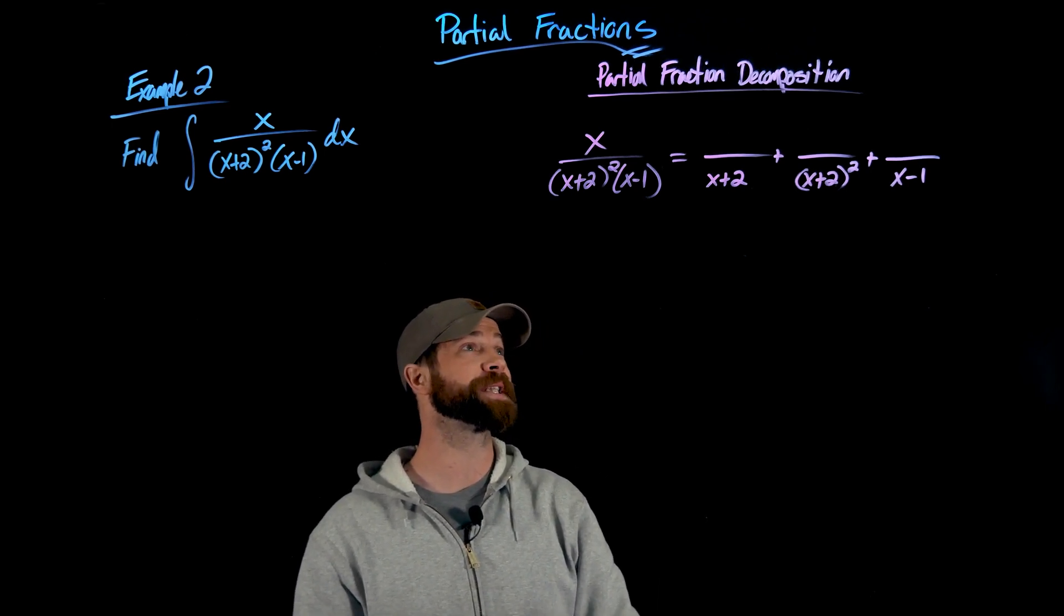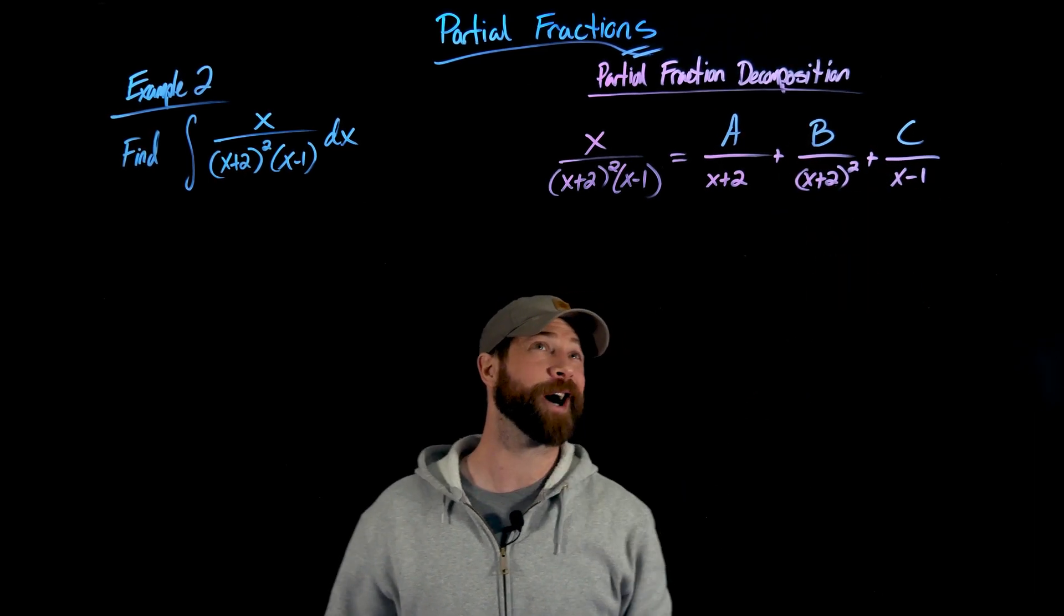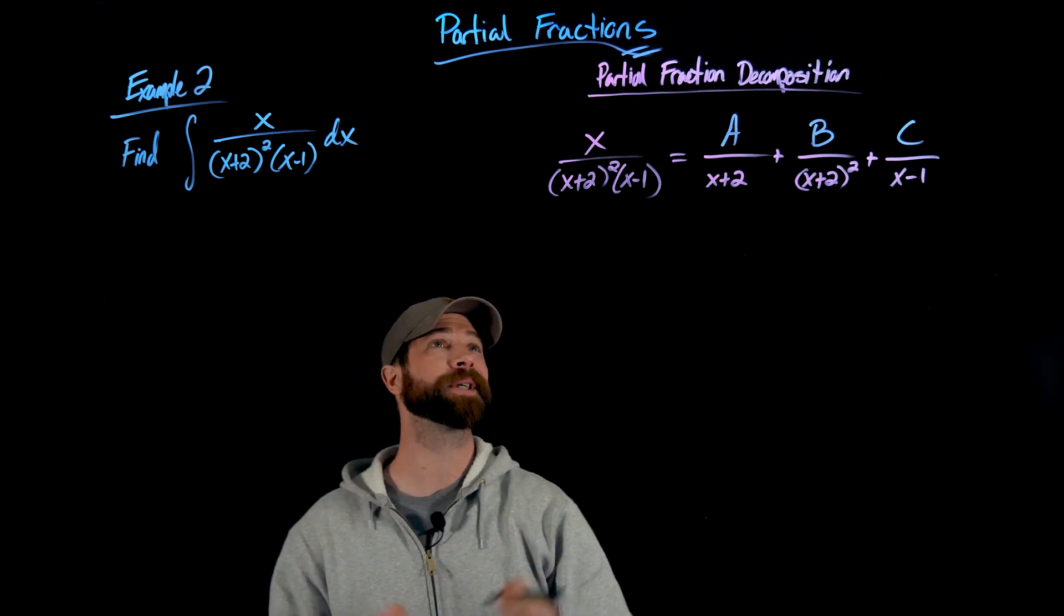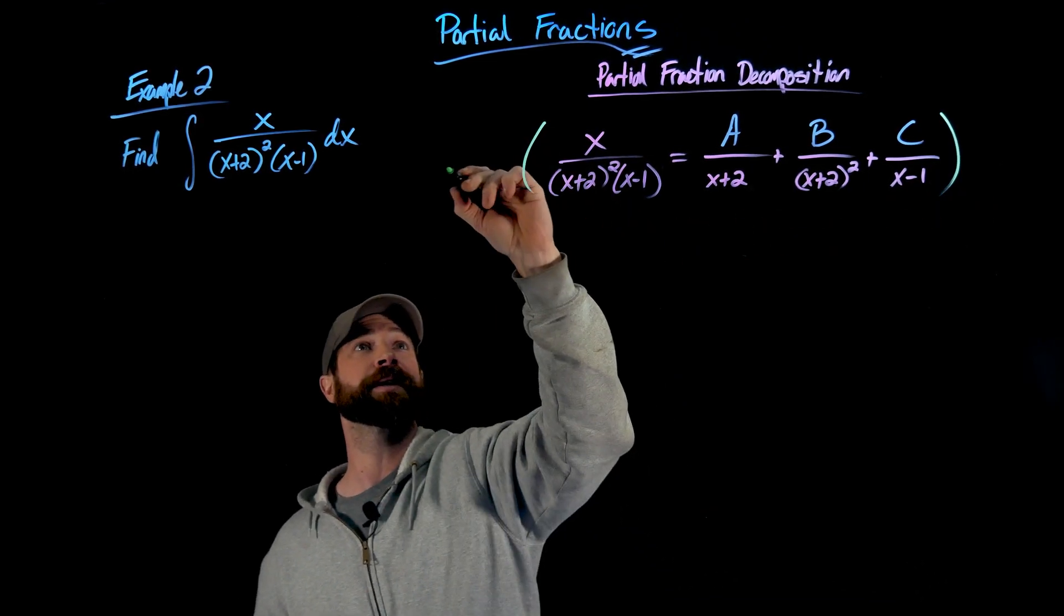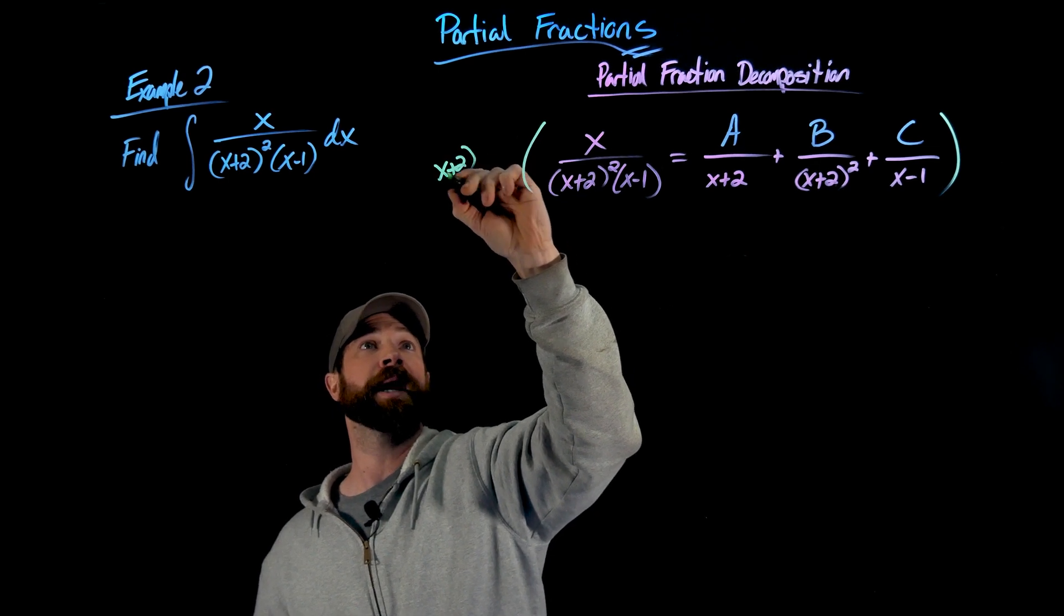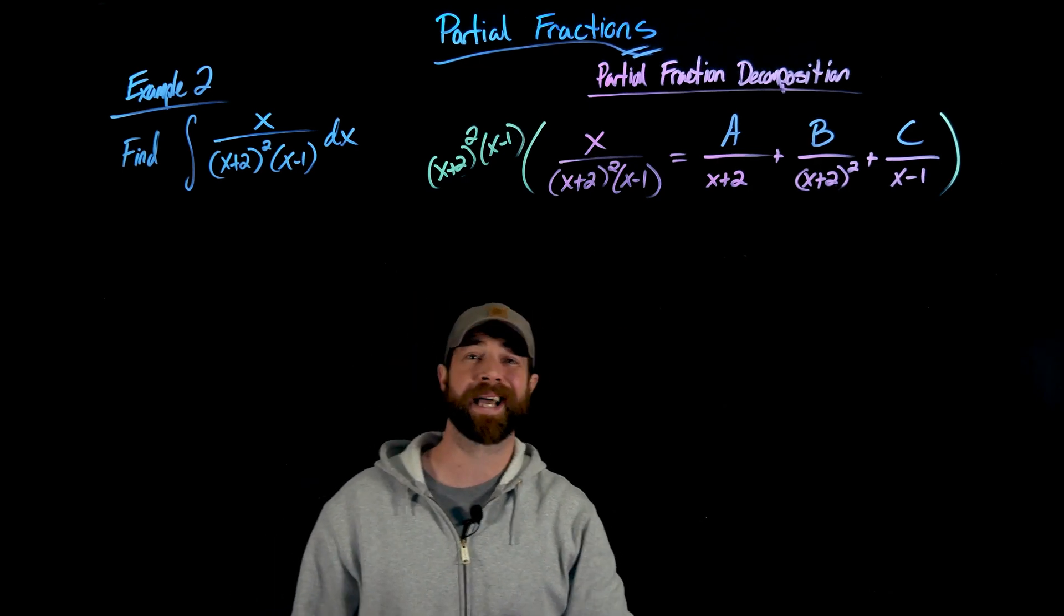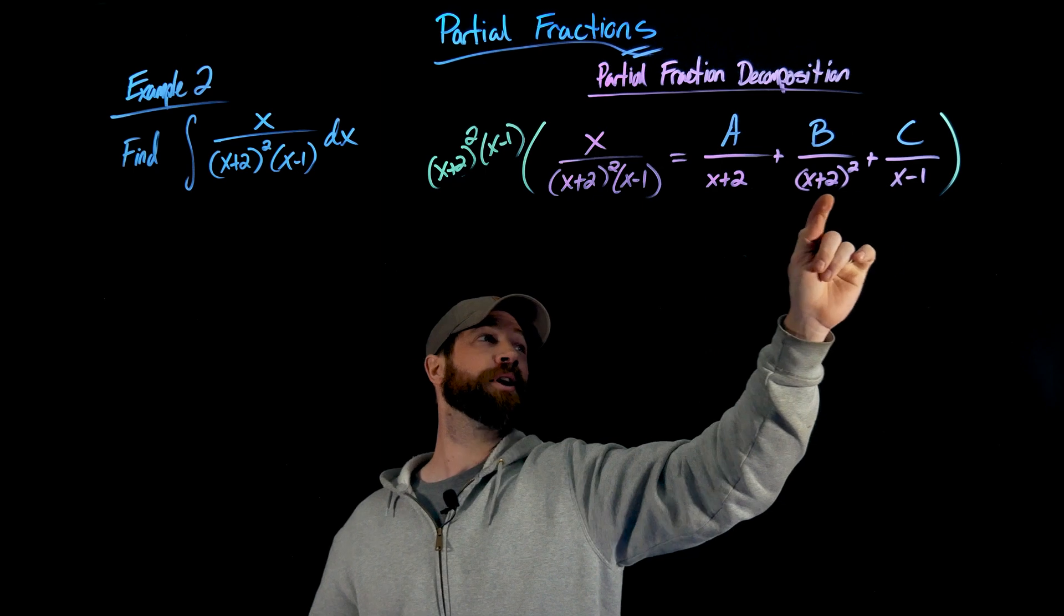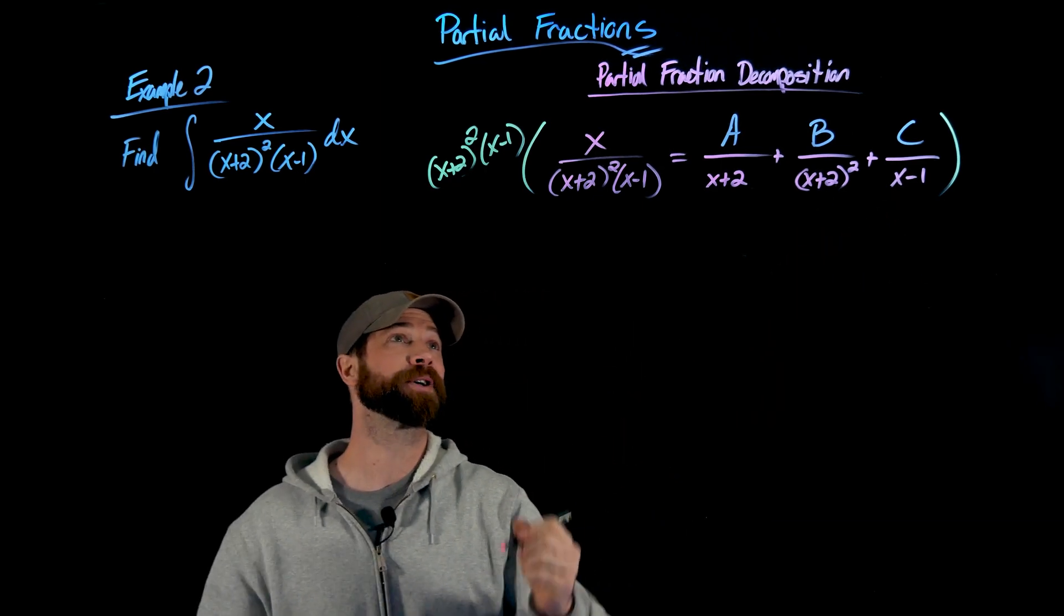And so how I'm going to do this now is I'm just going to use A, B, and C to be these constants that are up here. And my job is, again, to find these. The first thing I'm going to do is to multiply everything by this denominator right here. So I'm multiplying everything by x plus 2 squared times x minus 1. Again, as I do this and I multiply this to each of these terms, whatever is already in these denominators cancels whatever I have.